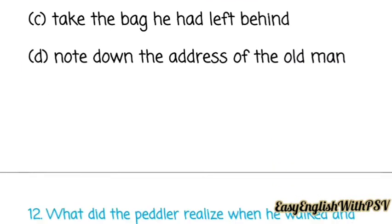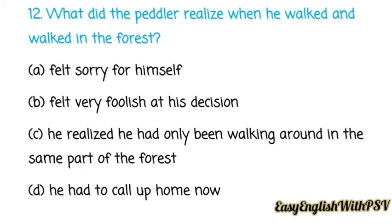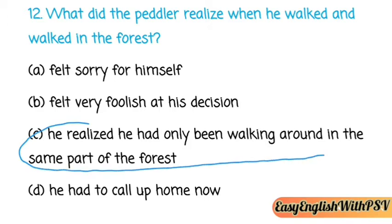Question number twelve: What did the peddler realize when he walked and walked in the forest? He felt sorry for himself, felt very foolish at his decision, or he realized he had only been walking around in the same part of the forest. The correct answer is: he realized he had only been walking around the same part of the forest.